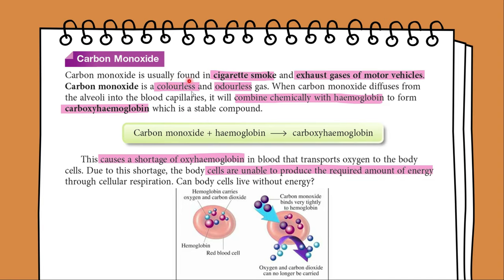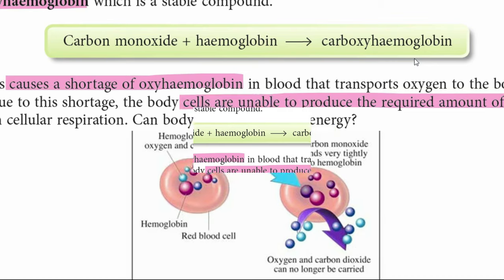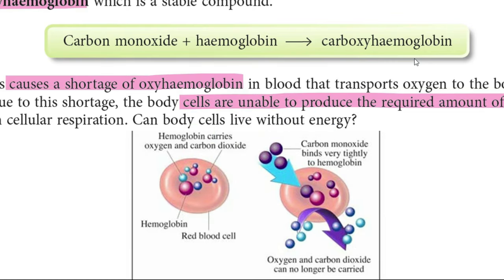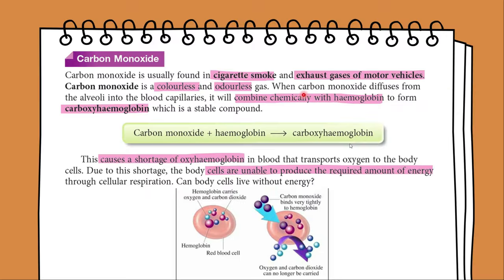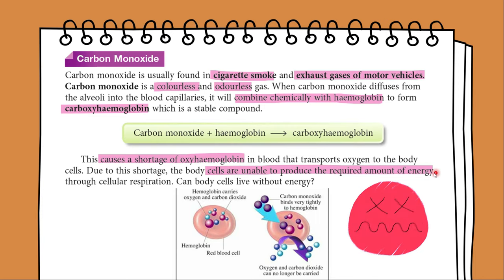Carbon monoxide is usually found in cigarette smoke too. It is colourless and odourless. Carbon monoxide can combine with haemoglobin faster than oxygen. When carbon monoxide diffuses from the alveoli into the blood capillaries, it combines chemically with haemoglobin to form a stable carboxyhaemoglobin. This causes a shortage of oxygen in the red blood cells, and the body cells are unable to produce the required amount of energy. This may cause dizziness, headaches and fatigue.